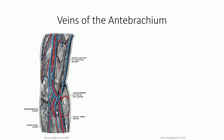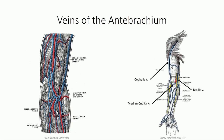The veins of the antebrachium are more variable in distribution compared to the arteries, but are generally named for the arteries they accompany. We also continue to see a venae comitantes arrangement of two bilateral deep veins for each artery. Superficially, we see the continuation of the basilic and cephalic veins, with a number of unnamed, highly variable sub-branches which drain into each.